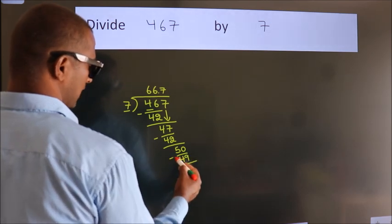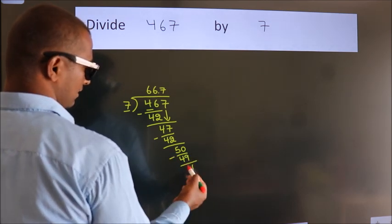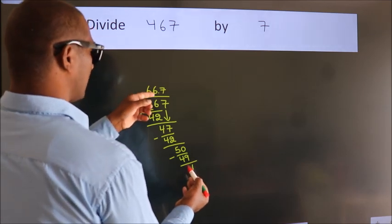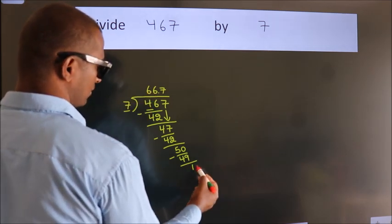Now we subtract. We get 1. After this, we already have the decimal, so directly take 0.